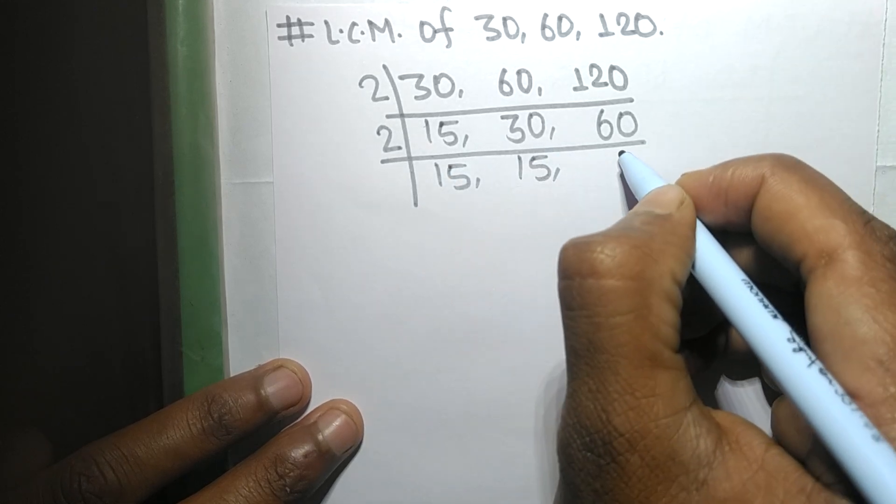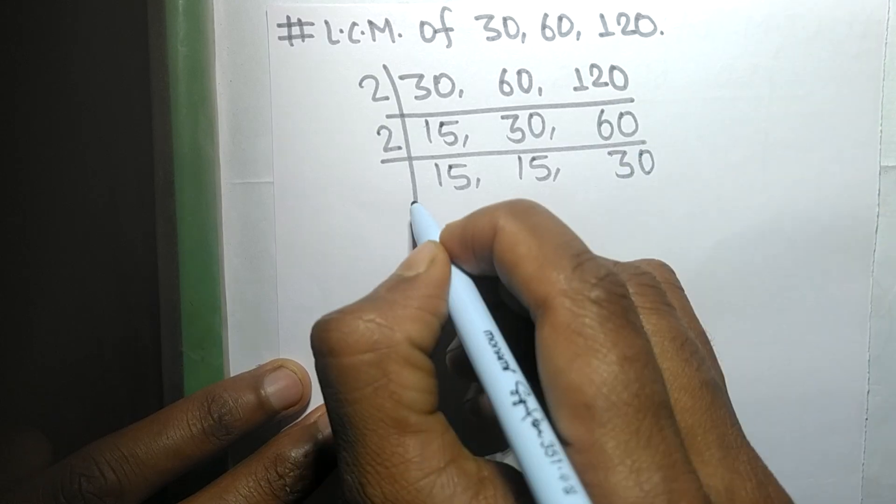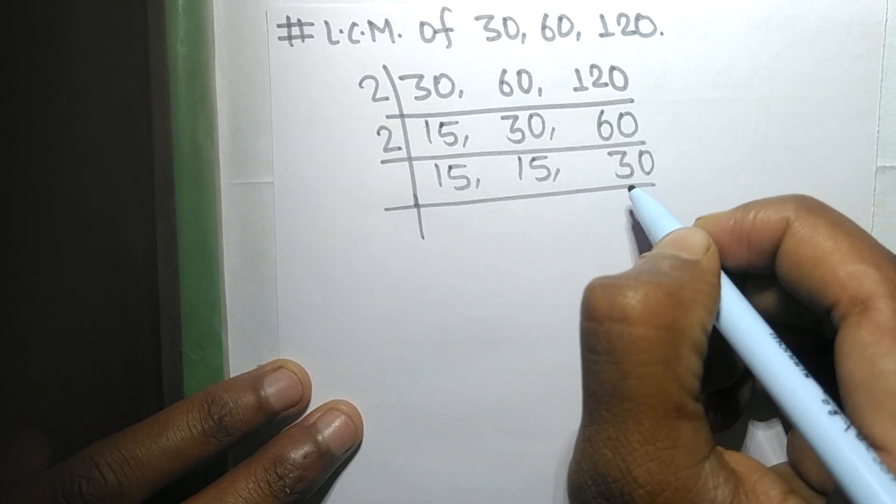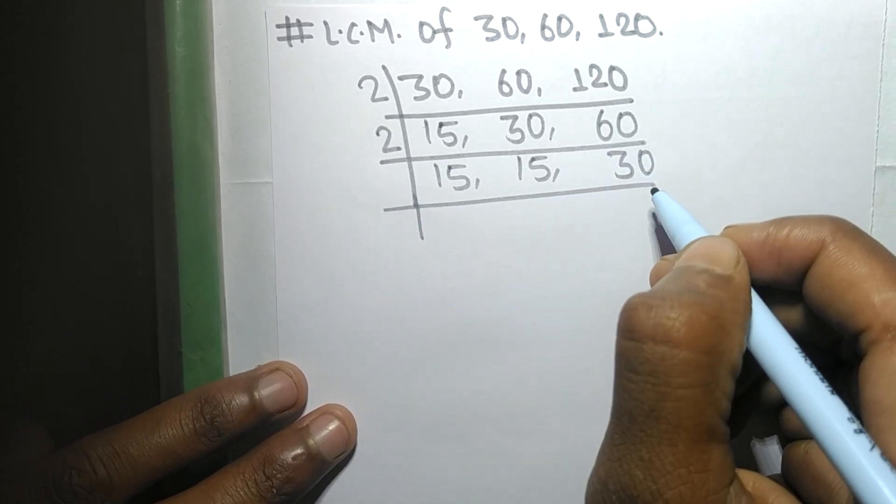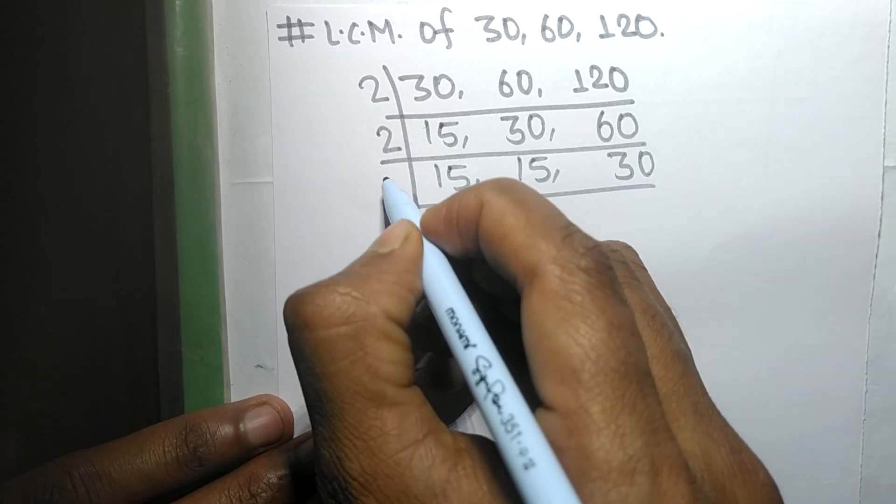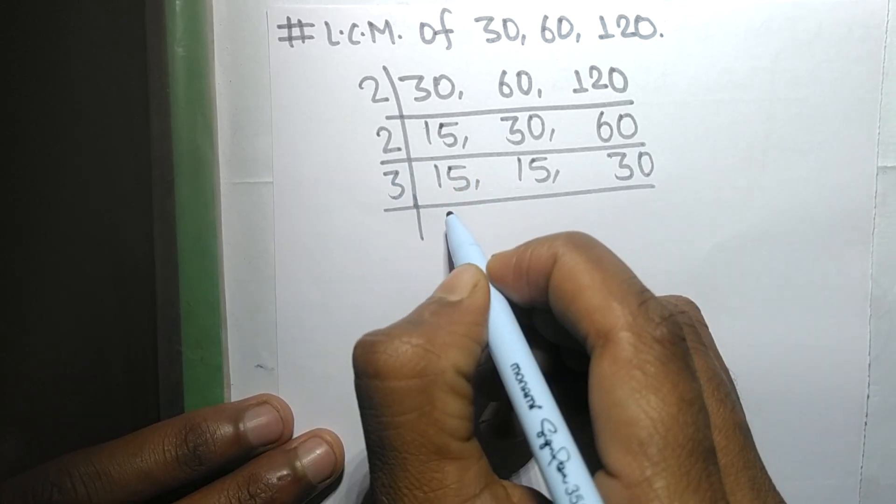Now these all numbers are exactly divisible by 3, so 3 times 5 means 15, 3 times 5 means 15, 3 times 10 means 30.